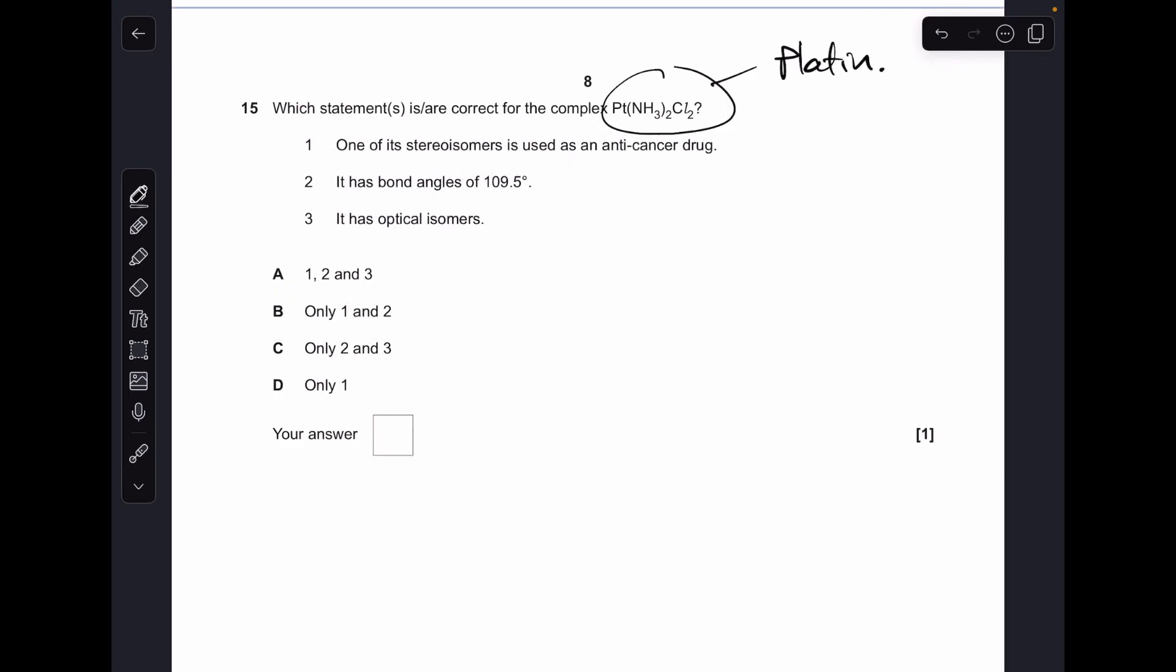Question 15, so that chemical is called platin. So is one of its stereoisomers used as an anti-cancer drug? Yes, it is. It's the cis isomer. So that's what cisplatin looks like. Are the bond angles 109.5? No, they're not. They're 90 degrees, so that one's wrong. It has optical isomers. No, it doesn't. Just cis trans. So only one was correct, so D was the answer.